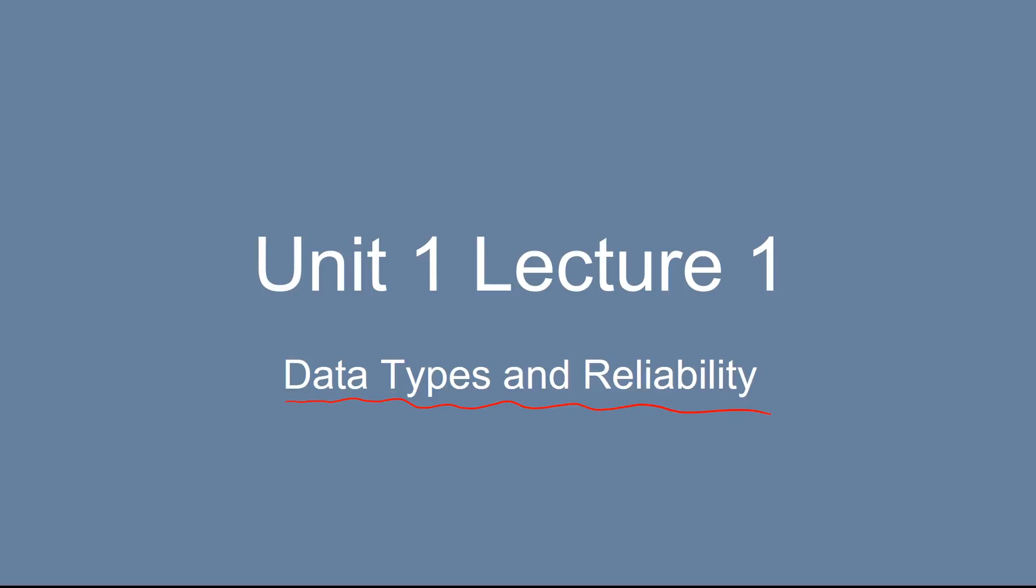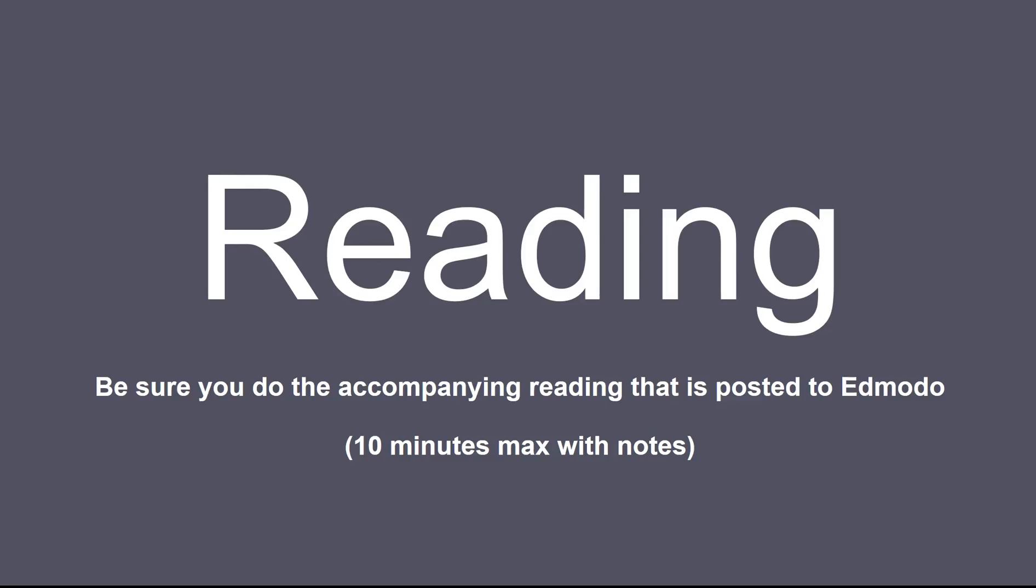We're not going to jump into atoms and molecules or something like that. We're really going to start talking about numbers and units and what they look like in the chemistry world. Now be sure you do the accompanying reading. On the Edmodo site, I put up a PDF. It should take you no more than 10 minutes. Limit your time, skim through that, get the gist. But do that reading after you watch. It's just some supplemental little extra added information to what we're going to talk about anyways.